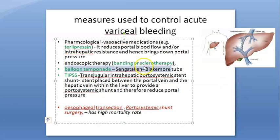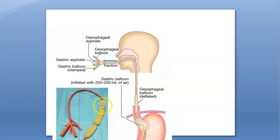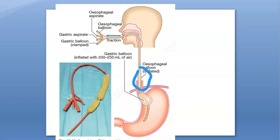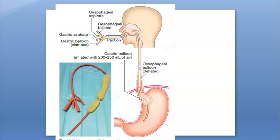Balloon tamponade uses a tube called the Sengstaken-Blakemore tube. This tube has multiple ports outside the mouth and two balloons inside — one in the esophagus and one at the entry of the stomach. By inflating these balloons, tamponade is applied to the fundus of the stomach and lower esophagus, exerting pressure to stop the bleeding.